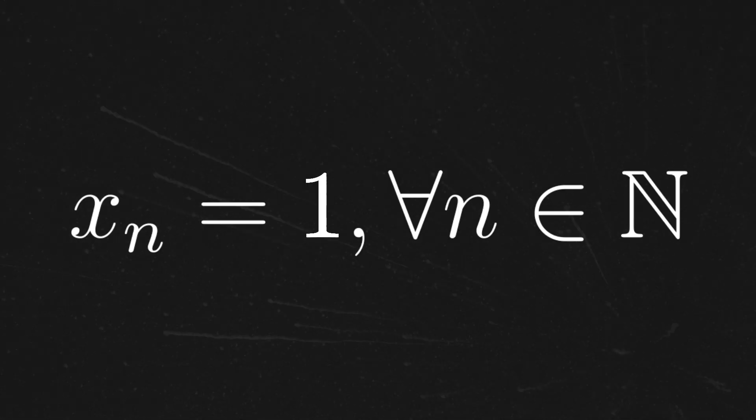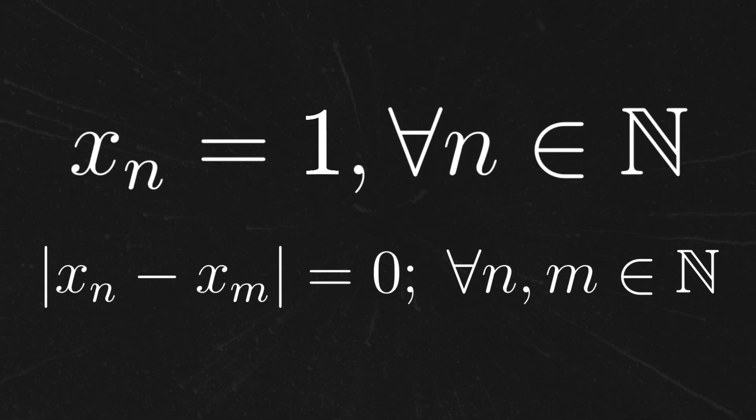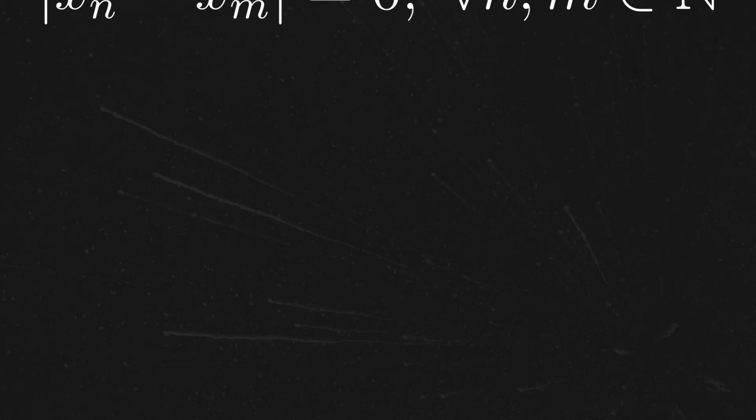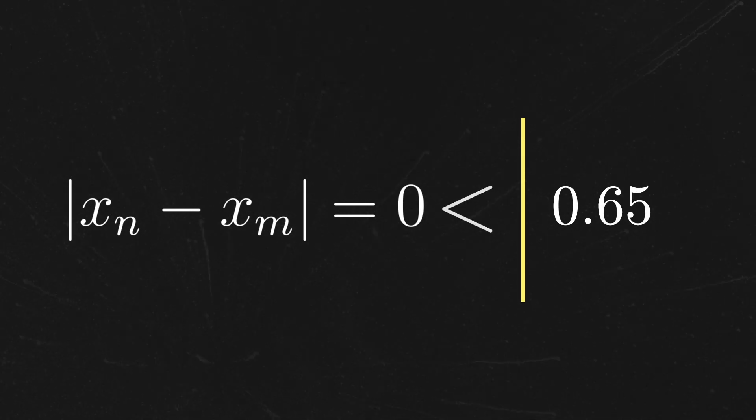Consider the constant sequence one, one, one, it's just ones the whole time. Since every term of this sequence is just one, the difference between any two terms of this sequence is the absolute value of one minus one, which is zero. Therefore, since for any choice of rational number bigger than zero, we find that the distance between any two points in the sequence is less than that rational number, and hence the sequence is Cauchy.